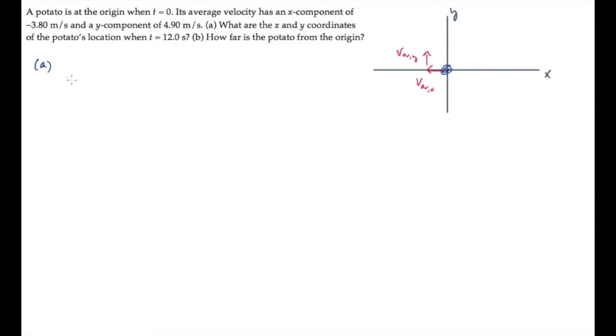Part A asks us for the potato's location after 12 seconds have passed. We'll find these x and y values using the definition of average velocity, which equals the displacement divided by the time. This is a vector equation, so we can write the components individually. The x component of the average velocity is the x component of the displacement, delta x divided by delta t, and the y component of the velocity is the y component of the displacement divided by delta t.